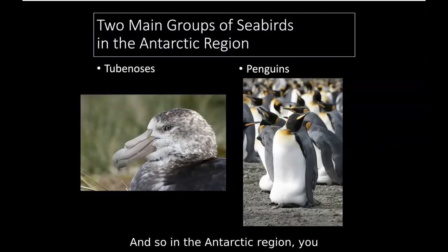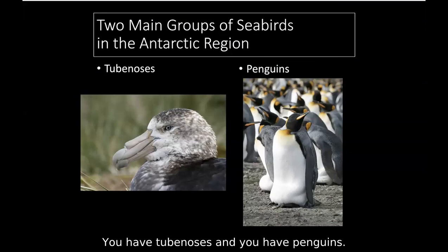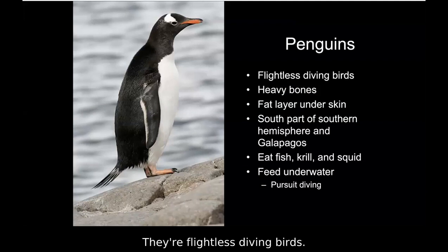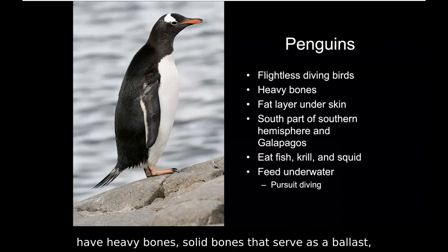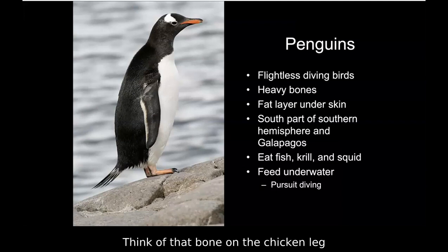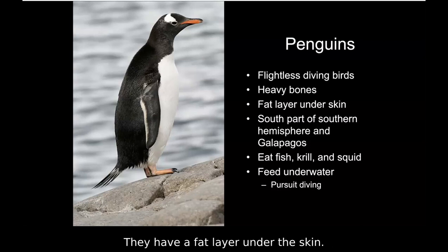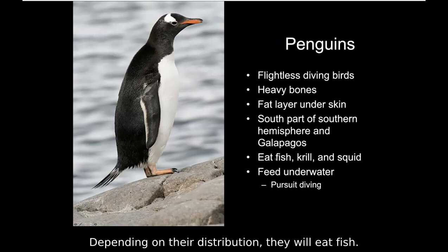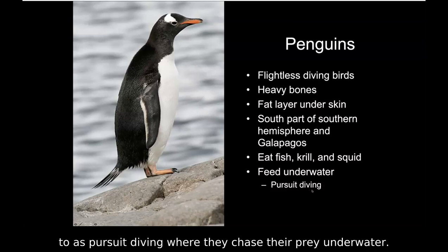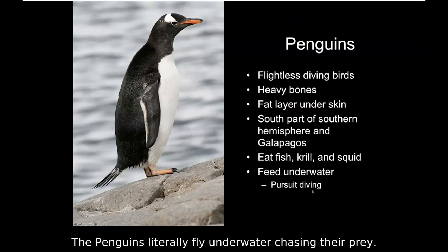In the Antarctic region you have two main groups of seabirds: tube noses and penguins. Penguins are flightless diving birds — they differ from typical birds because they have heavy solid bones that serve as ballast, whereas birds around here have hollow, very light bones. They have a fat layer under the skin. Depending on their distribution, they eat fish, krill, or squid. Adélies eat mostly krill. They feed by pursuit diving, literally flying underwater chasing their prey.